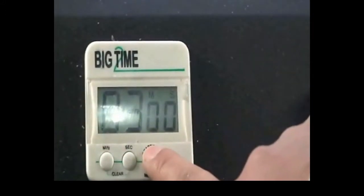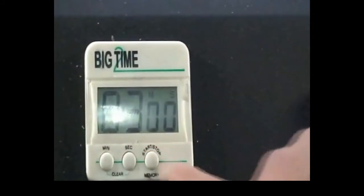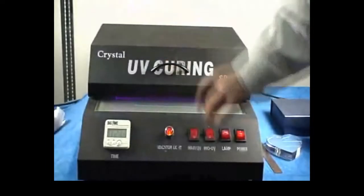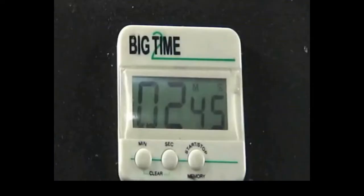Then put it on the operation panel and set the time at 3 minutes. Press the button to start. Combine the upper part of the machine. After 15 seconds, press pause on the timer and open the machine.